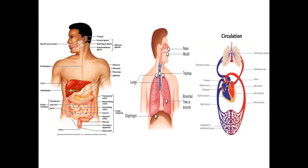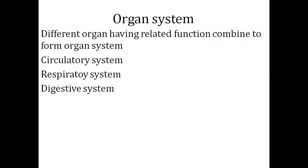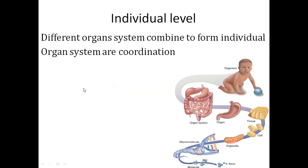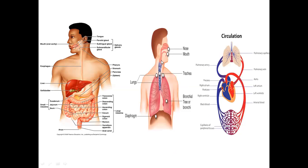The next level is the organ system level. Different organs having related functions combine to form an organ system. For example, the digestive system includes the small intestine and large intestine. The respiratory system includes the nasal cavity, pharynx, larynx, trachea, and lungs. You can also have a circulatory system responsible for oxygenation.